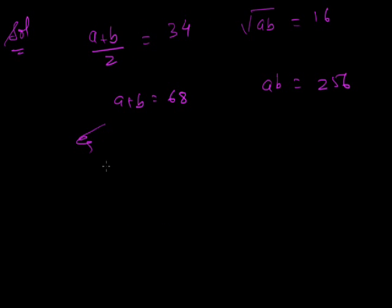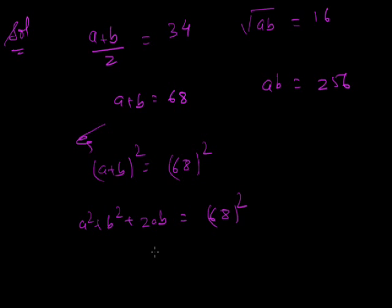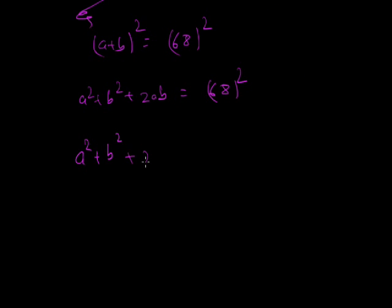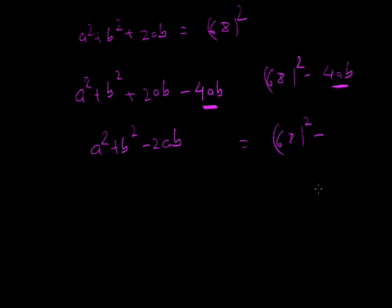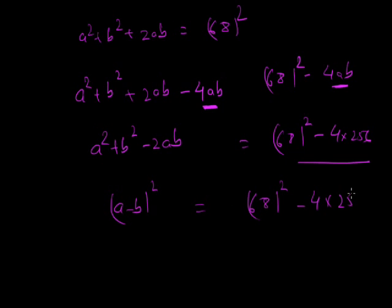The geometric mean gives √(AB) = 16, so AB = 256. Now squaring (A + B): A² + 2AB + B² = 68² = 4624. To find (A − B)², we subtract 4AB from both sides: (A − B)² = 68² − 4×256 = 4624 − 1024 = 3600.